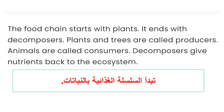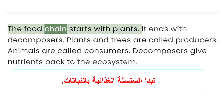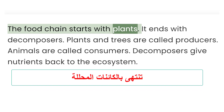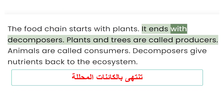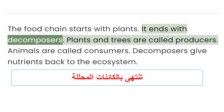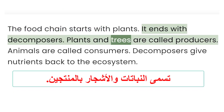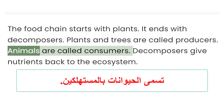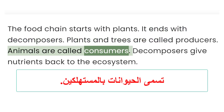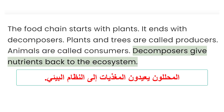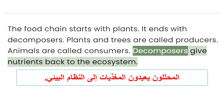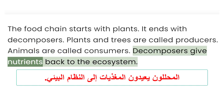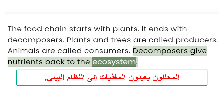The food chain starts with plants. It ends with decomposers. Plants and trees are called producers. Animals are called consumers. Decomposers give nutrients back to the ecosystem.